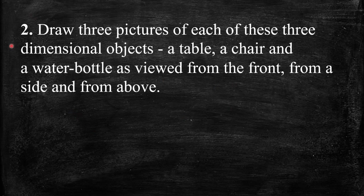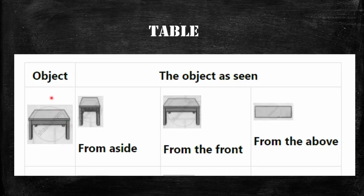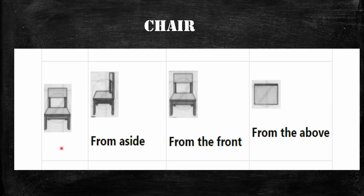For the table, here you can see the object. From the side view it looks like this, from the front view it looks like this, and from the above view it looks like this. Draw this in your notebooks. For the chair, here you can see the object. From the side view it looks like this, from the front view it looks like this, and from the above view it looks like this.